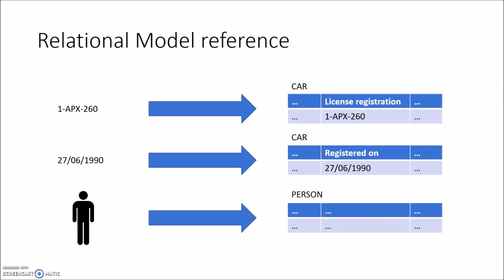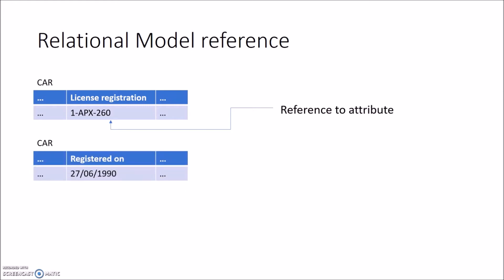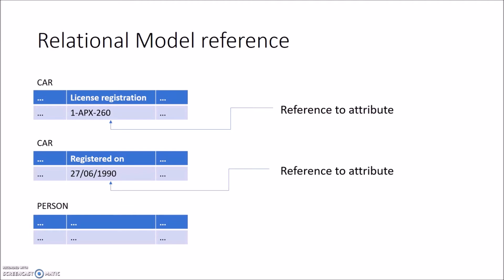Now let's check if we can refer to all those object types. For example, the license registration — we can refer to this value by means of a foreign key because it's an attribute. The same applies for the 'registered on' date; we can map the reference to a foreign key in the relational schema. But for a person, which is a table in a relational schema, we don't have a way to refer to that table on its own. This is simply not possible.